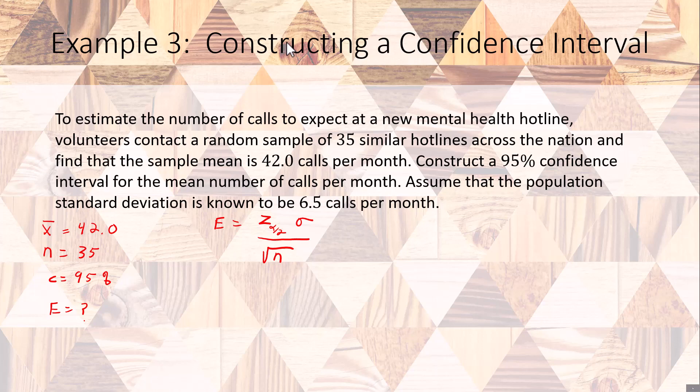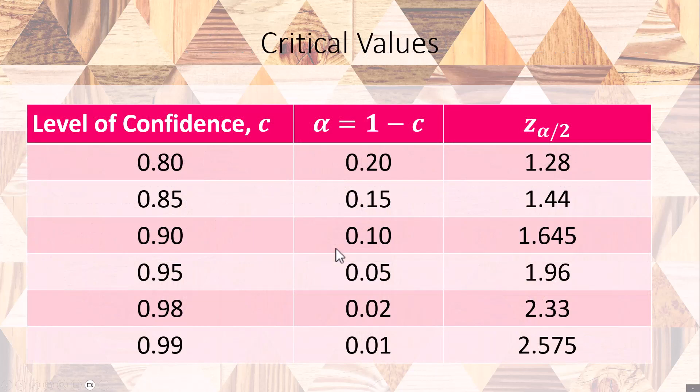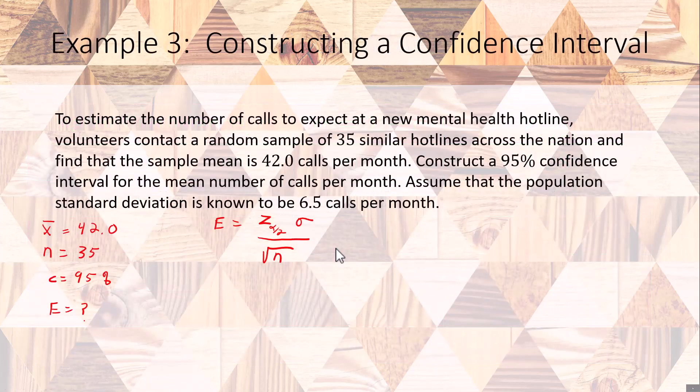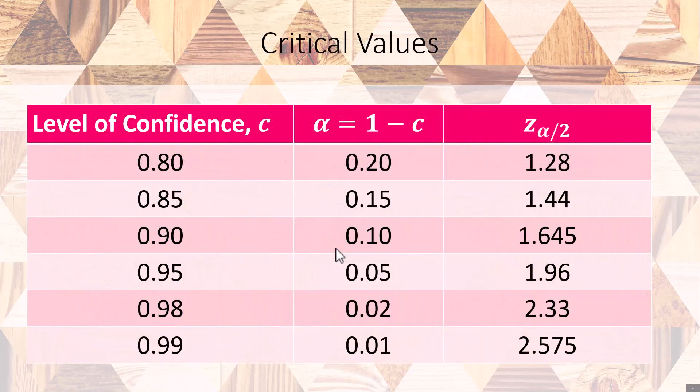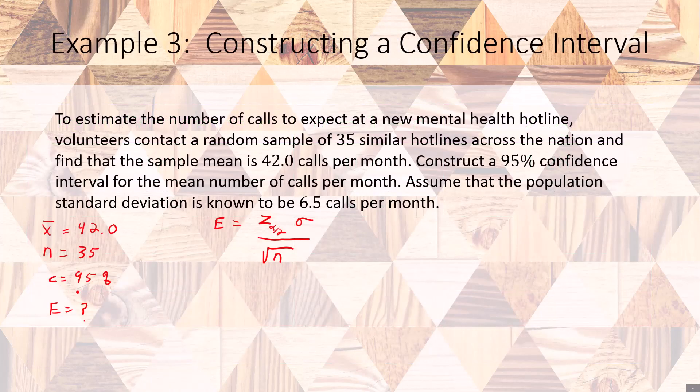We can find that using this table right here and our critical value is going to be 1.96, not 0.196, sorry about that. We know that Z alpha over 2 is 1.96 and we know what sigma is. So this is going to equal 1.96 times sigma, which is 6.5, divided by the square root of 35.